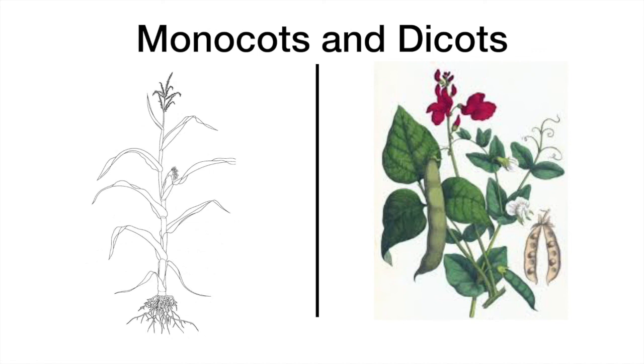Monocots have only one cotyledon in their seed and have a branching root system. They have leaves with parallel veins.